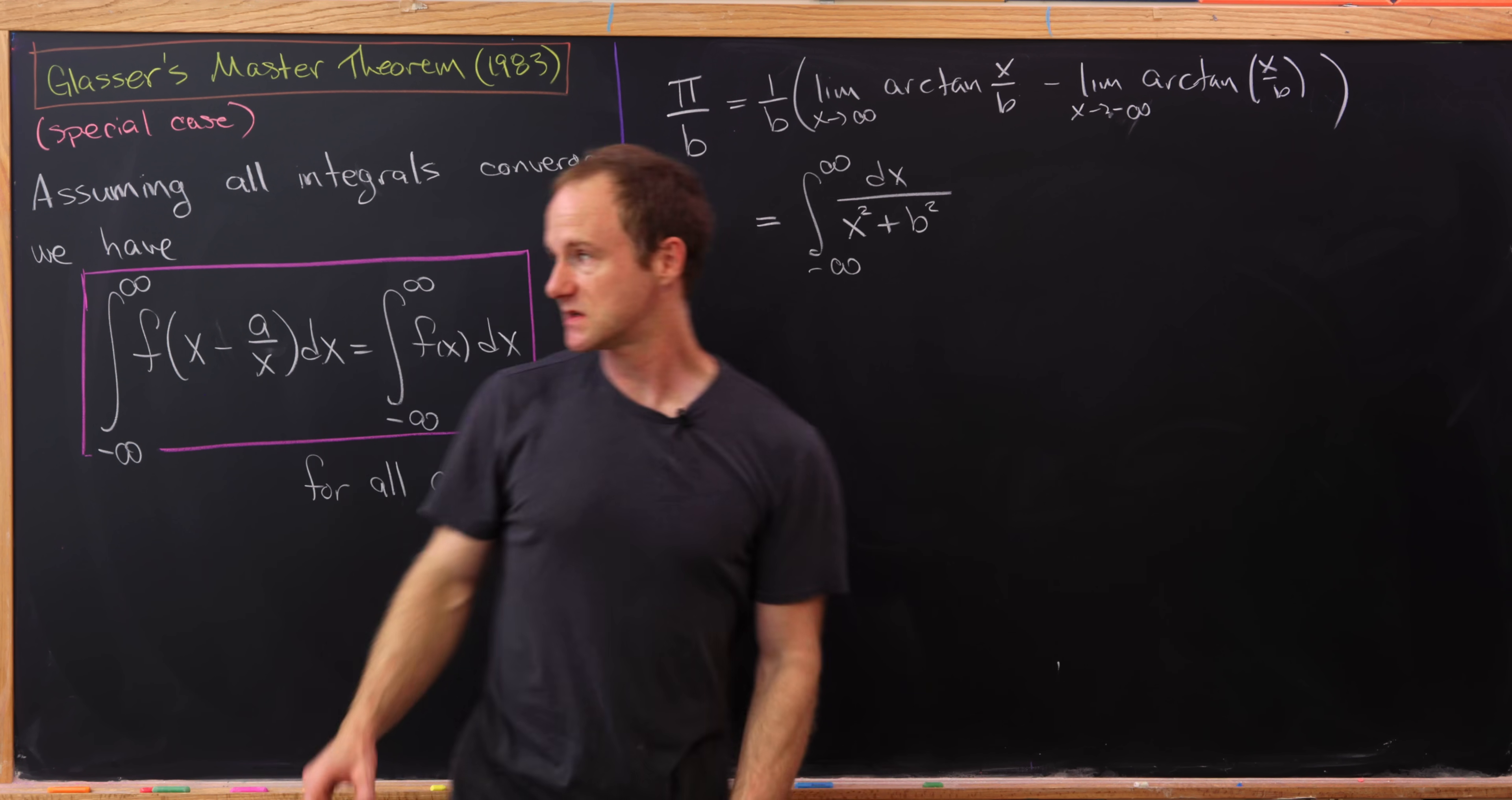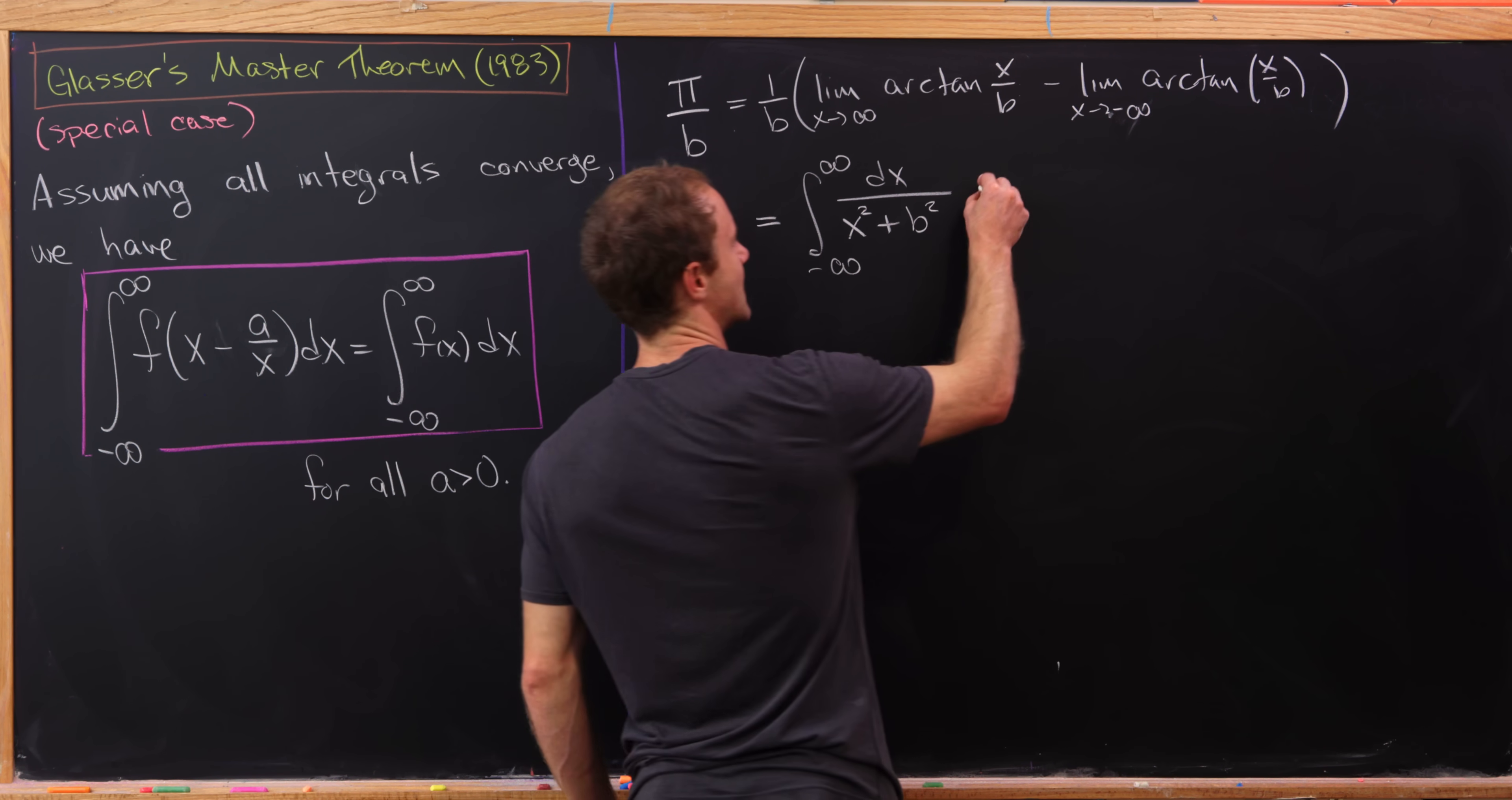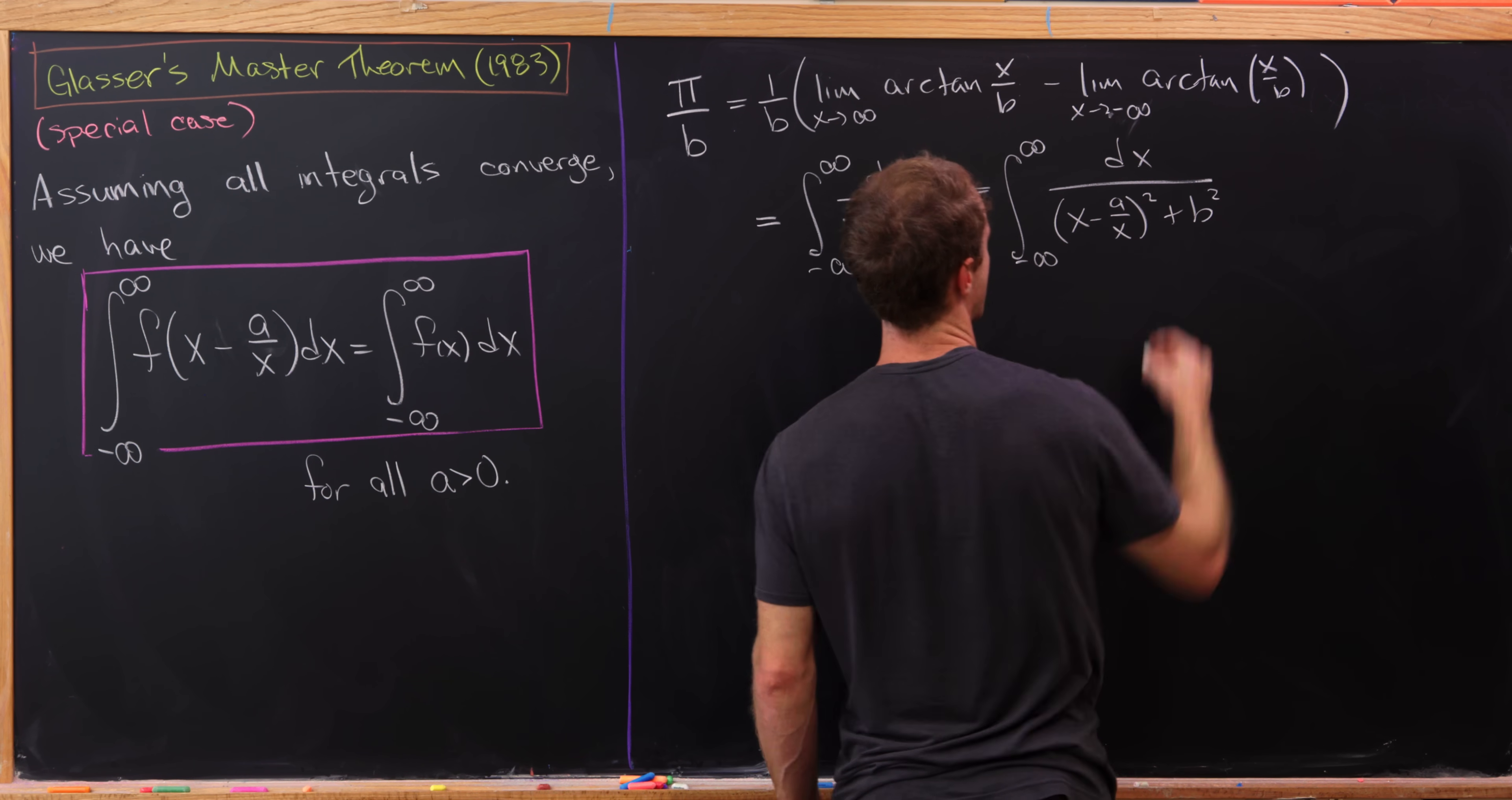But now let's apply this rule over here. So we'll replace x with x minus a over x. And we don't have to worry about the dx thing because this formula held by our previous reasoning. So that means we know that this is equal to the integral from minus infinity to infinity. We have dx. Now this is going to be over x minus a over x quantity squared plus b squared.